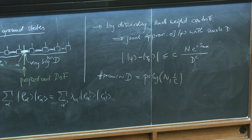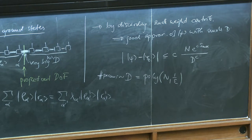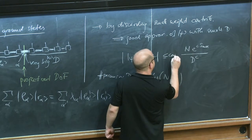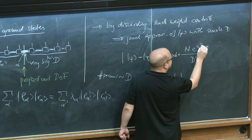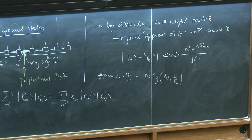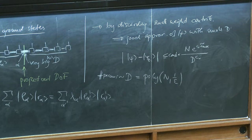More precisely, the entropy that appears is a Rényi entropy for alpha less than 1, and the constant in the bound depends on the Rényi index — something like alpha over (1 minus alpha). There is a divergence as alpha approaches 1, i.e., as we approach the von Neumann entropy. The statement relates how fast the Schmidt coefficients decay given a fixed entropy, and it depends on the Rényi index.